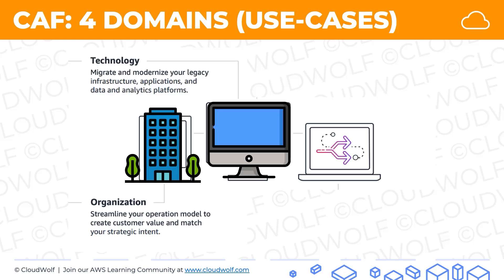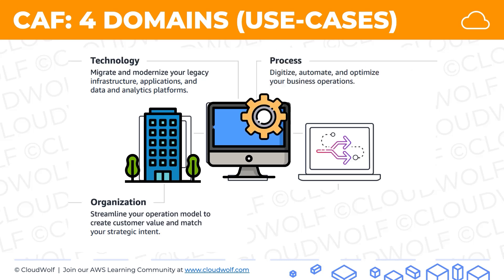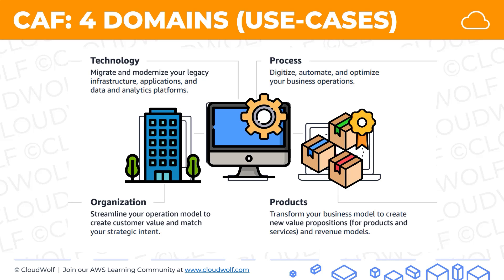The third domain is process: digitize, automate, and optimize your business operations. The fourth domain is products: transform your business model to create new value propositions and revenue models for products and services. Think of it as organization containing technology, processes, and products that go out to customers — those are the four domains or use cases.